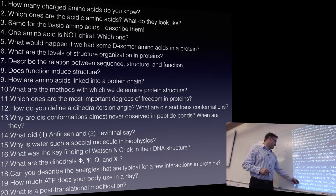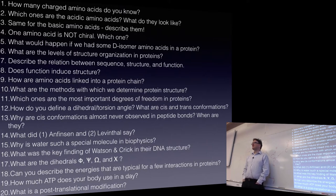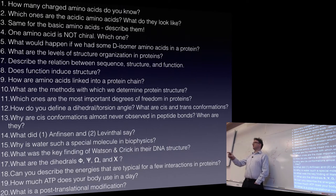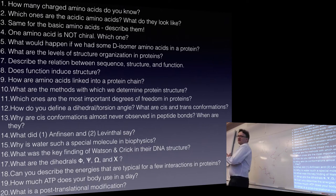How much ATP does your body use in a day? Is that a small or large number? It's roughly your body weight. You turn over roughly 70 kilos of ATP per day in your body. ATP is converted to ADP and then you recharge it back to ATP. That's what you use most of the energy for when you eat — that's why you need 2,000 kilocalories per day. We're also going to talk about what is post-translational modification.